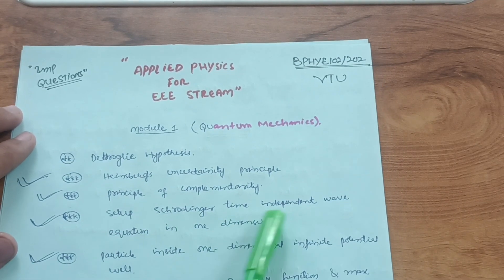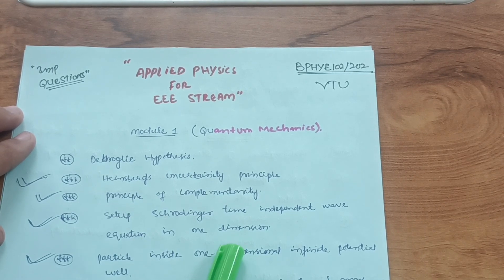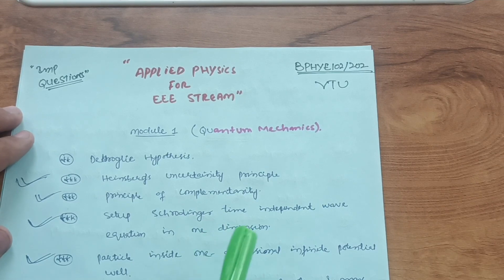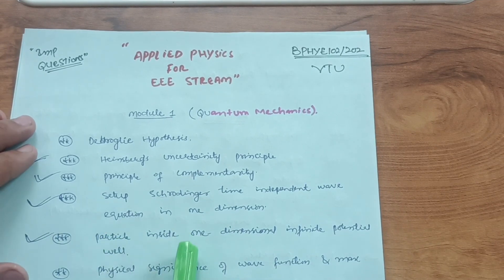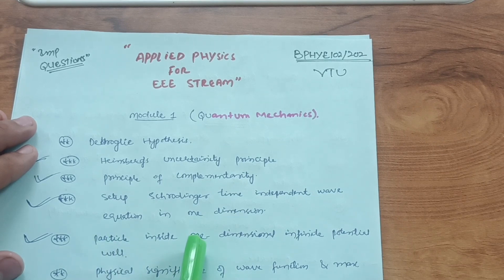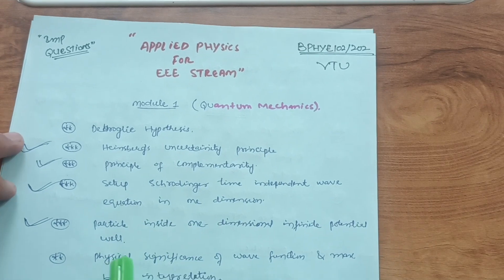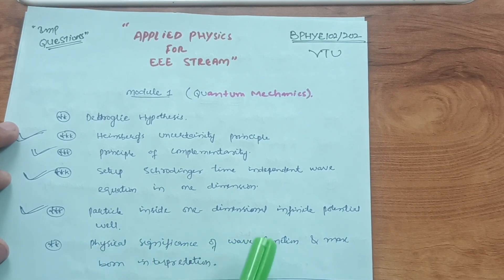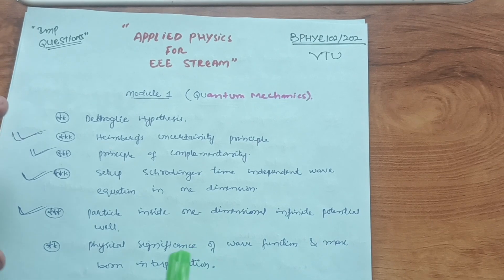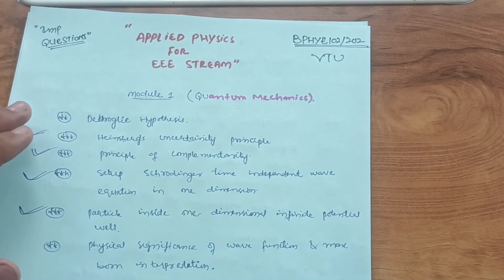Next, derive Schrödinger's time-independent wave equation in one dimension — this is an 11th-class concept, just with a little differentiation. You only need to derive it for one dimension, not three. Also cover the particle inside a one-dimensional infinite potential well, including the energy levels and graphs. The last concept in Module 1 is the physical significance of the wave function and Max Born's interpretation.